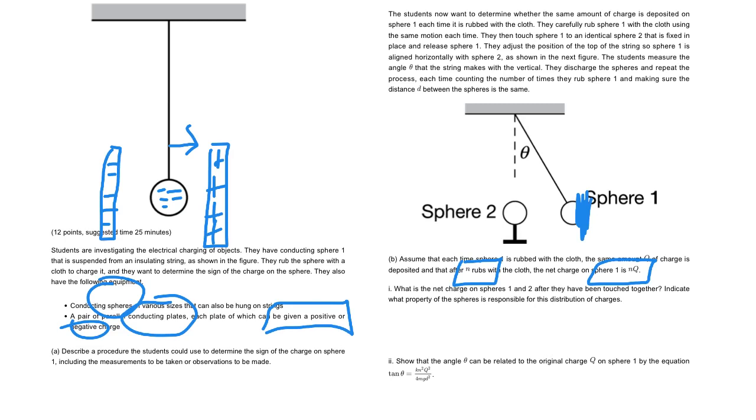So then they're going to touch them together. This touches here. So let's say this sphere one has a charge of nq, and you're going to touch them together. Spheres are all equal, everything's equal about them. So if that happens, then each sphere should essentially take on half the charge. So they're asking what's the net charge on each? So it would just be one half nq on each.